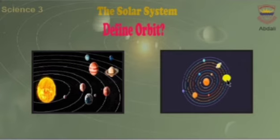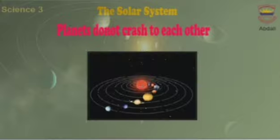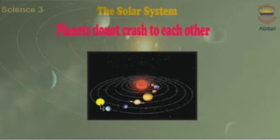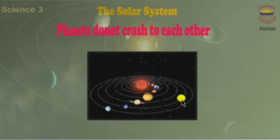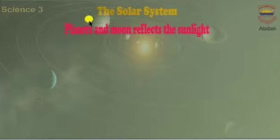Why don't planets crash into each other? Because each planet travels along a different orbit. As you can see in this picture, every planet moves in its own orbit, so there are many orbits and they don't crash into each other.